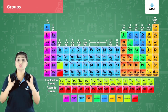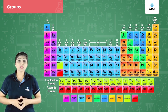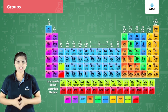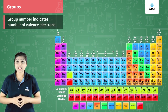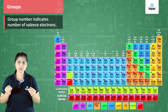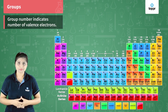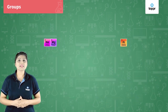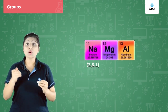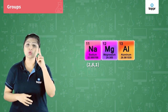Now let us come to groups. Groups are the columns of the table. Elements belonging to the same group show similar physical and chemical properties. The group number indicates the number of valence electrons in the atom of an element. Valence electrons are the electrons present in the last orbit. For example, sodium's electronic configuration is 2, 8, 1 — it has one electron in the last orbit, so it is placed in group 1.